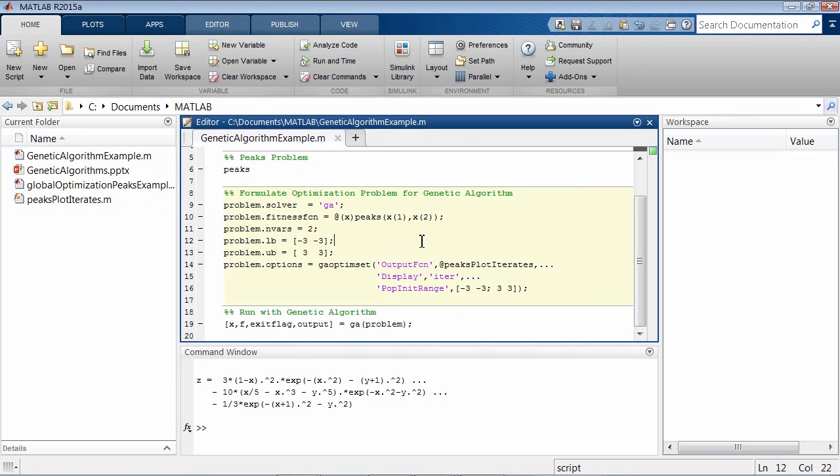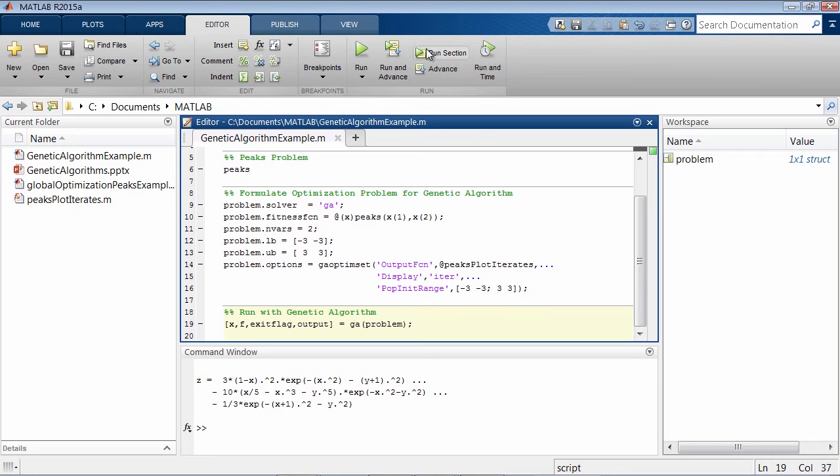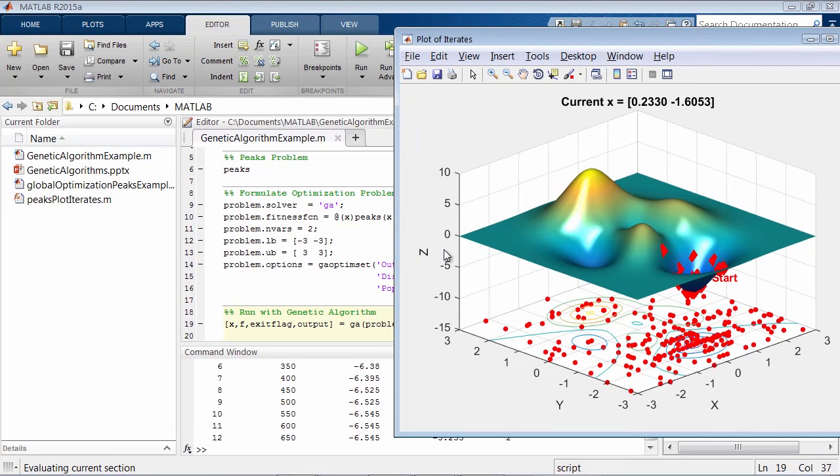I'm going to set up an optimization problem for the genetic algorithm. I'll give bounds of minus 3 on both of the decision variables and an upper bounds of positive 3 on both the variables, and we'll tell the genetic algorithm to solve our problem.